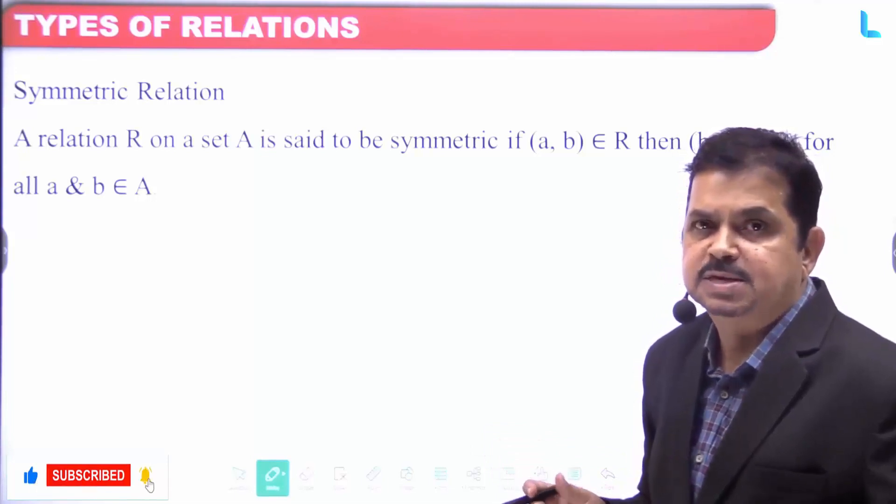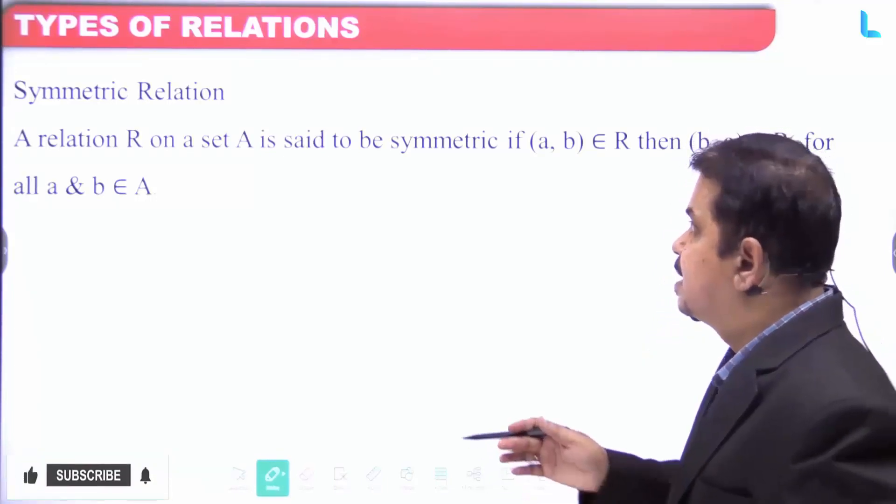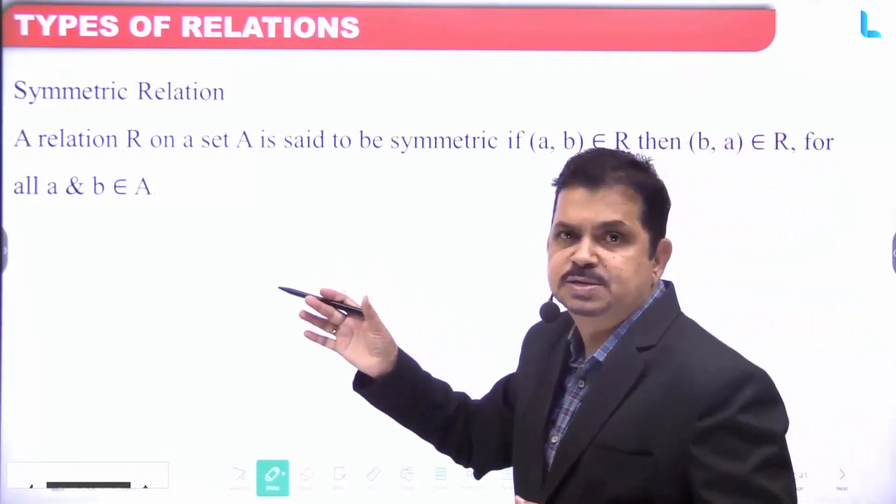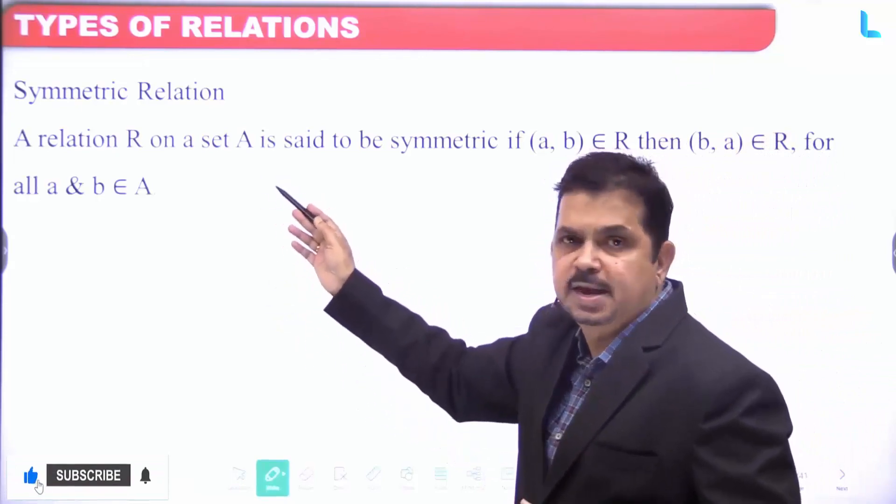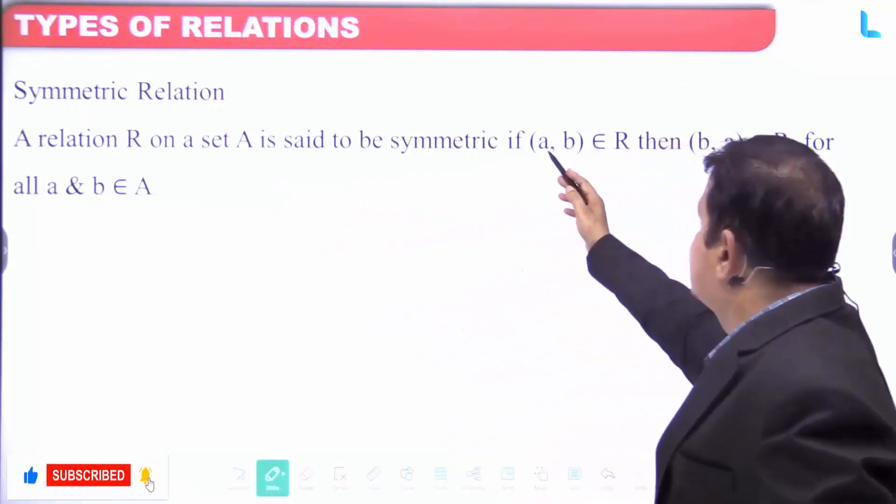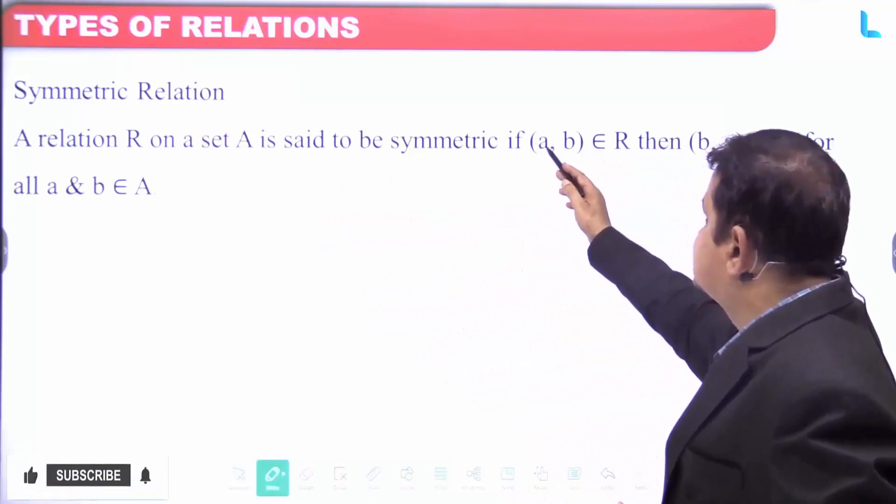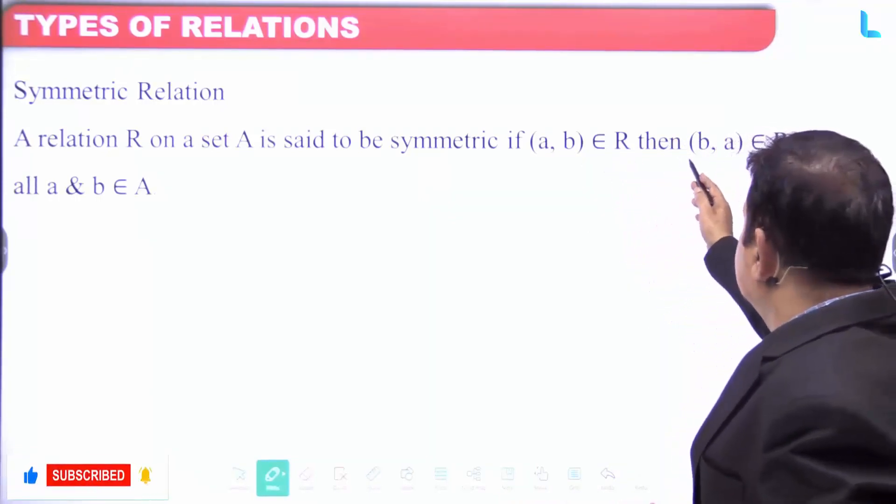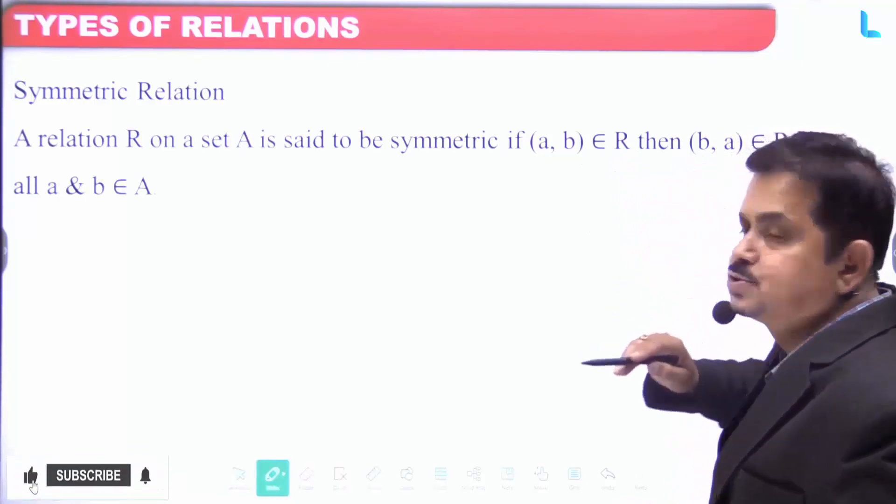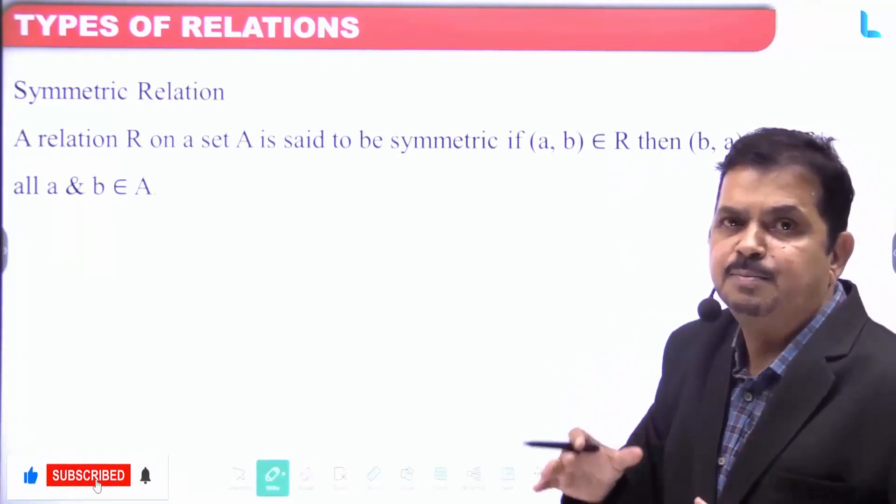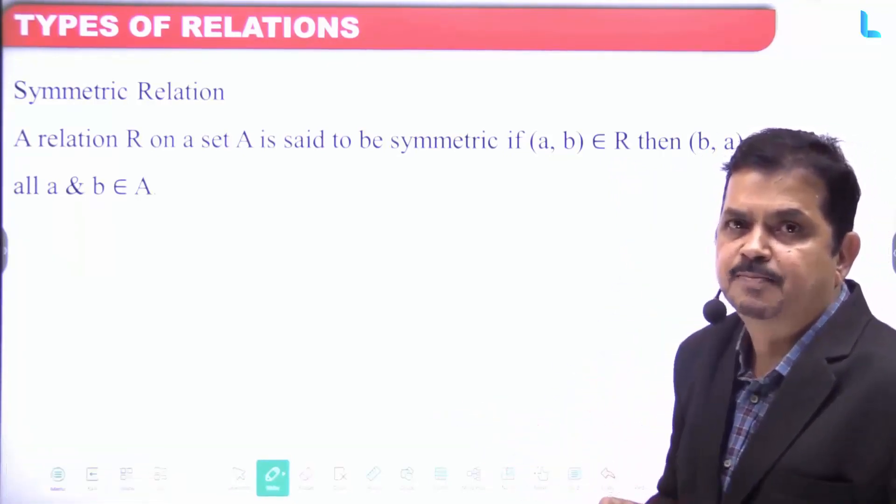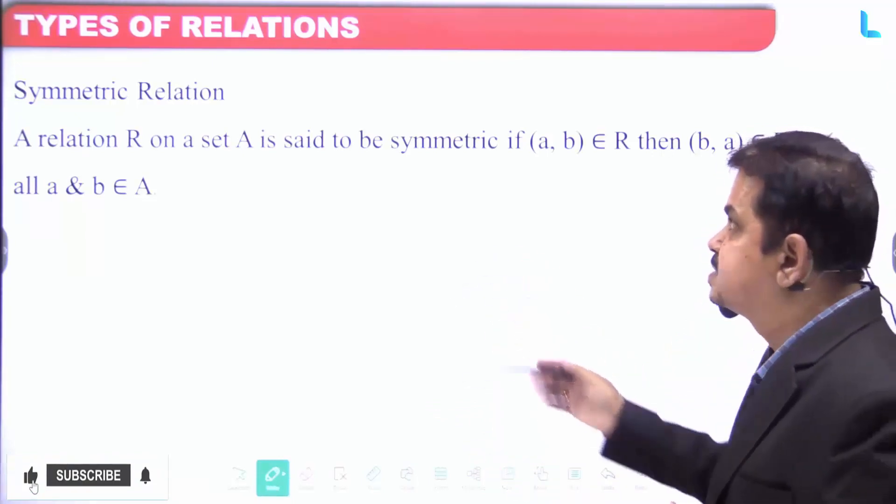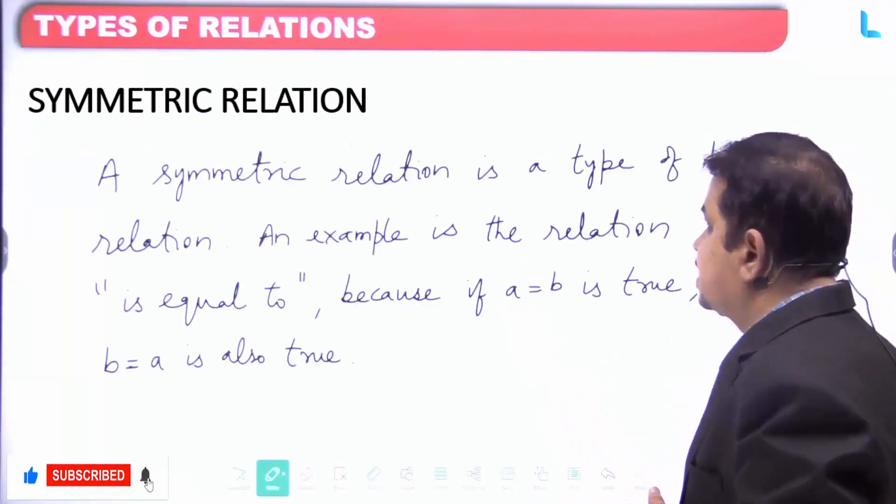The definition is clear. A relation R is said to be symmetric on a set A if the elements (a, b) belongs to R, then (b, a) also belongs to R, for all a and b belongs to the set A. Now let us try to understand this with an example.